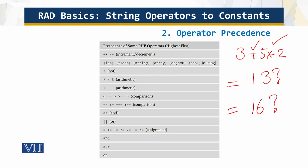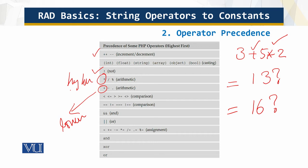You can see in the table that increment and decrement have the highest precedence. Then NOT has the next precedence. As you move down the table, the precedence becomes lower. You can see that multiplication has a higher precedence than addition. Therefore, 13 is the correct answer, not 16.